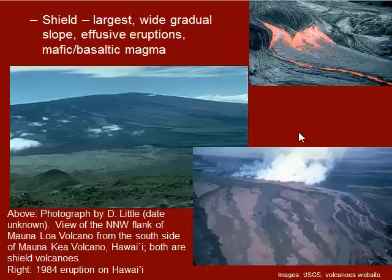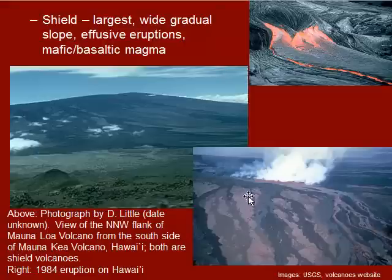The magmas in shield volcanoes are usually basaltic or mafic in composition. Here you can see a close-up of one of these lava flows, and a zoomed-out version of what those lava flows look like — very calm, kind of a warm maple syrupy type eruption at these volcanoes.